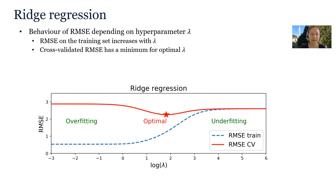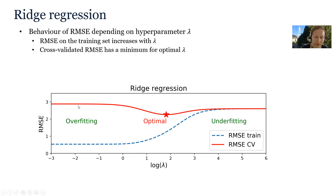The optimal hyperparameter lambda is found using cross-validation. In this plot we have plotted the behavior of root mean square error depending on hyperparameter lambda. For small values of lambda the root mean square error on the training set is low, but the cross-validated root mean square error is high.